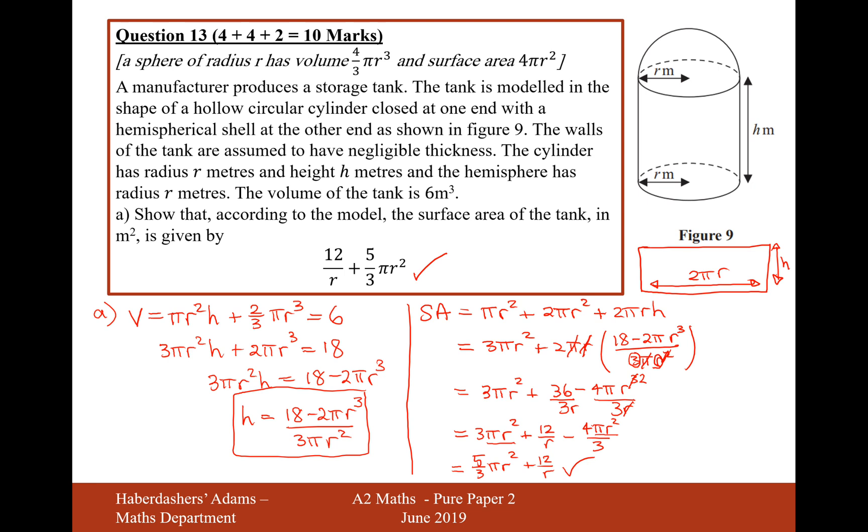Tricky little question this one. You need to go through the volume first to get your expression for h because your final answer is not going to contain h. Then you work out your surface area with h in it and then replace h with what you've found over this side here, then simplify your algebra to get this expression here. That's the answer to part A.